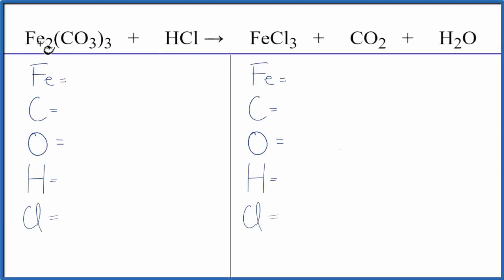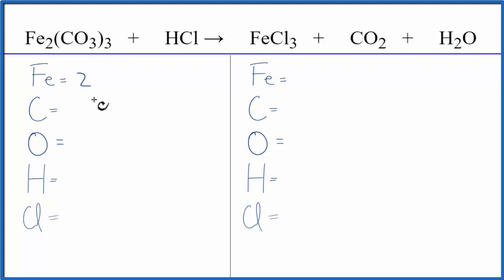To balance this equation, iron three carbonate plus hydrochloric acid, let's count the atoms up on each side of the equation. We have two irons, and this three applies to everything here, so we have one times three: three carbons, three times three: nine oxygens, one hydrogen, and one chlorine.